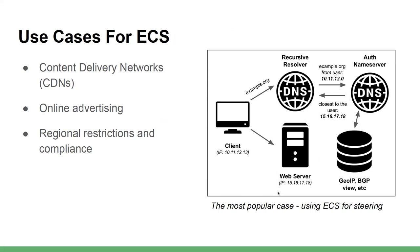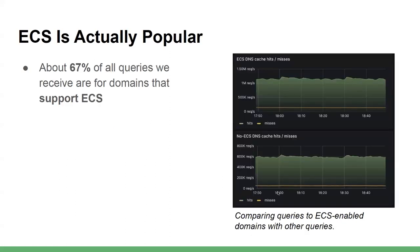Why do CDNs use geosteering? It's more reliable and more manageable than anycast will ever be. There are other things ECS can be used for, like online advertising restrictions. For instance, I've seen a case when a name server refused to respond to a DNS query unless the IP address in the ECS was from a particular country. According to our data, eDNS client subnet is very popular — about 67% of DNS queries are for domain names whose name servers indicate ECS support.